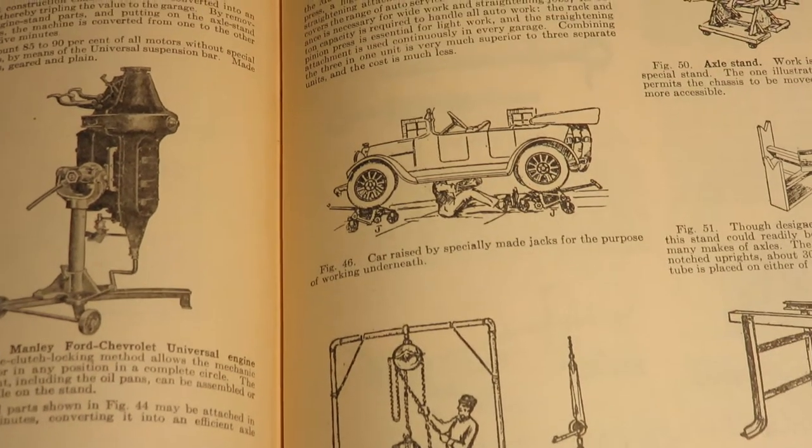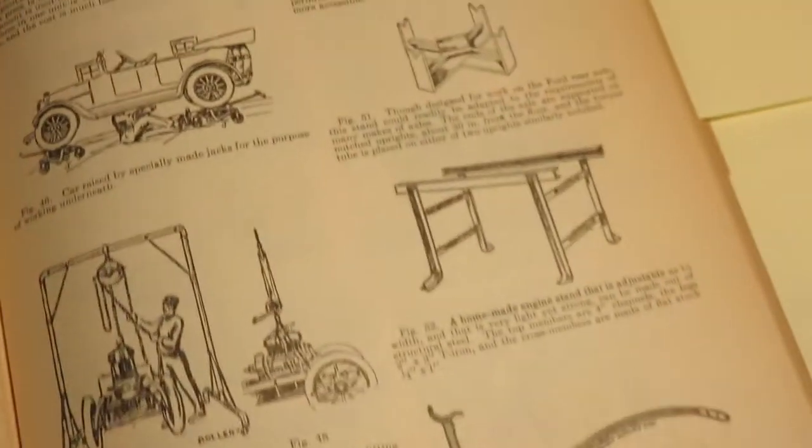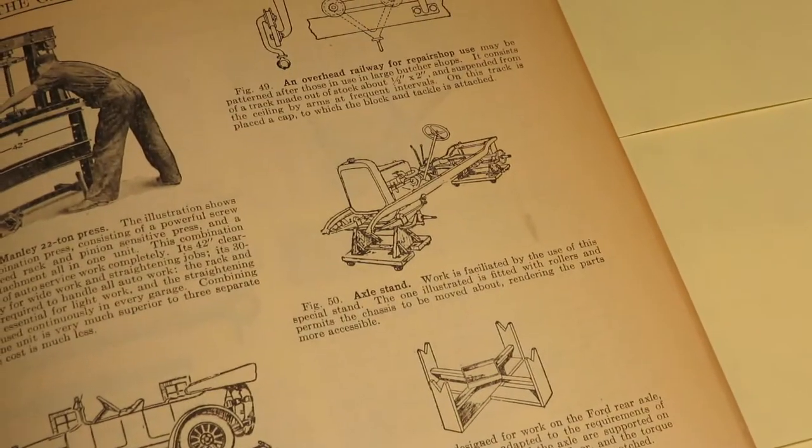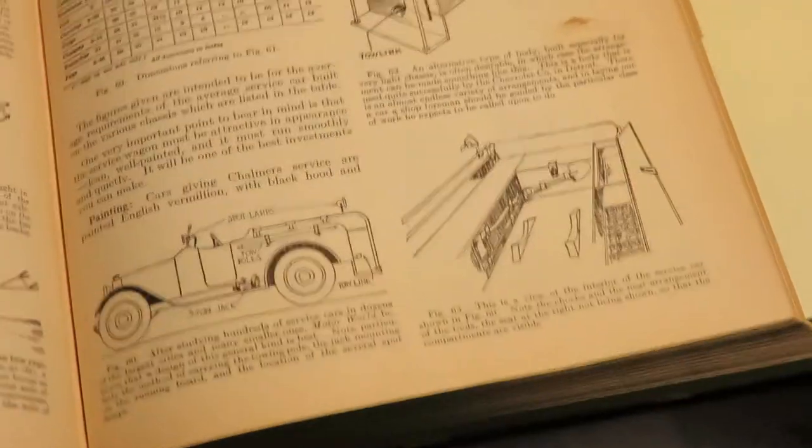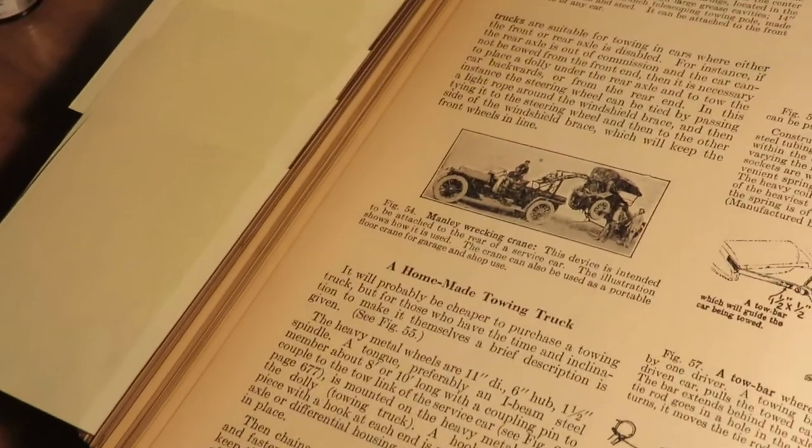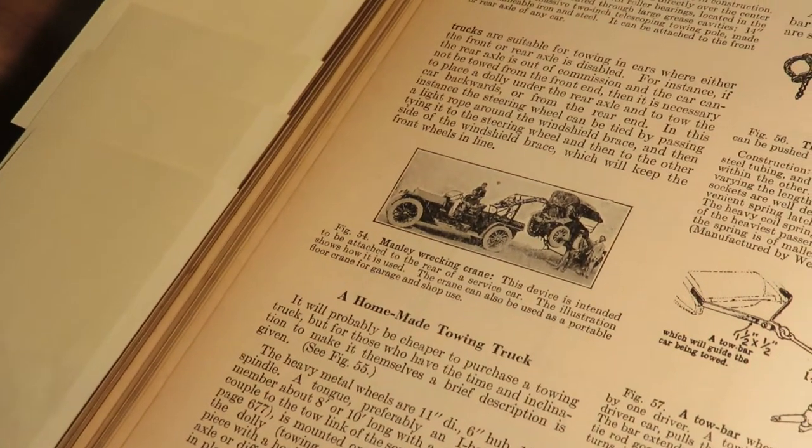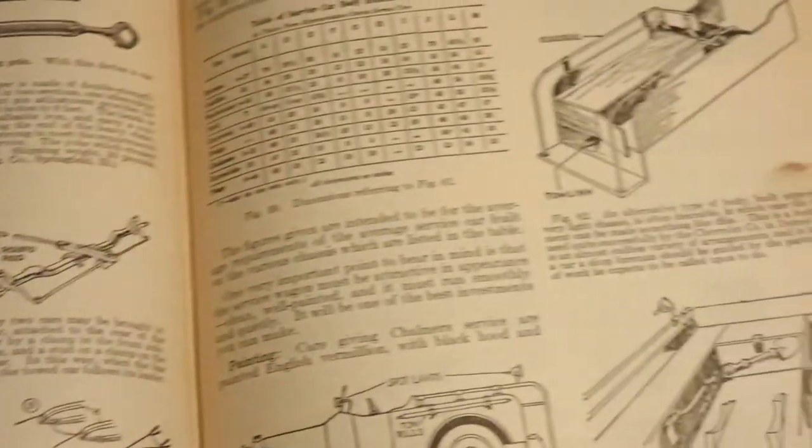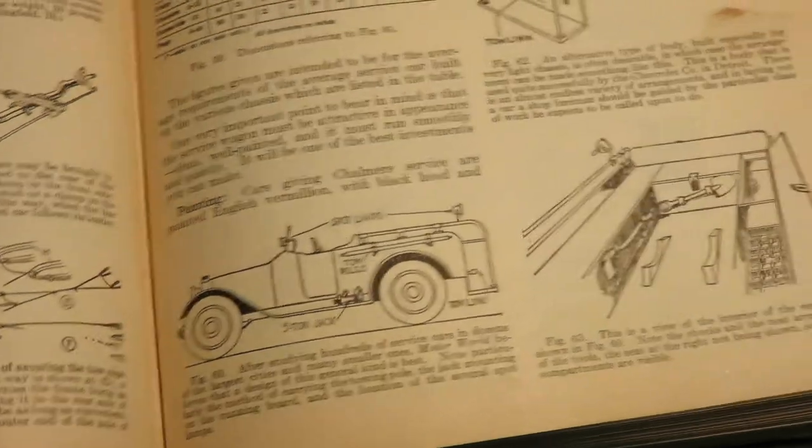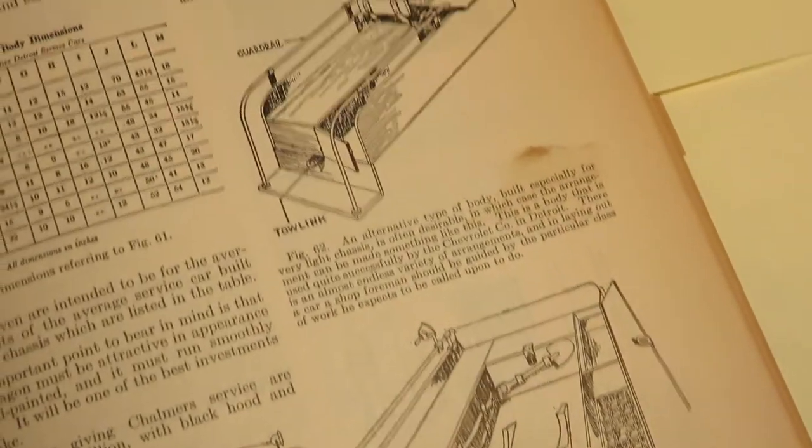Here's a guy underneath the car on jacks. That's a whole frame on a roll around jacks. How about a tow truck. And here's how to make the tow truck. Some more tools and equipment.